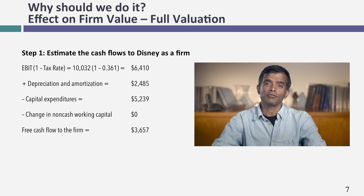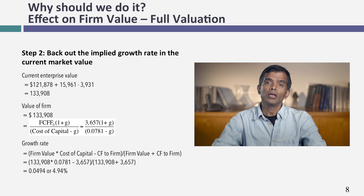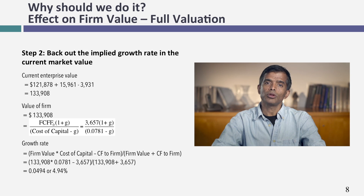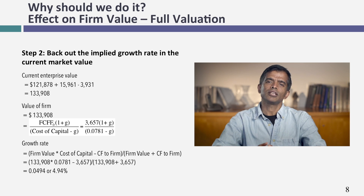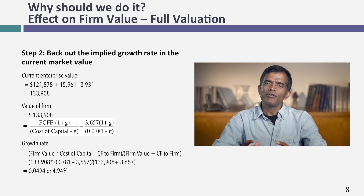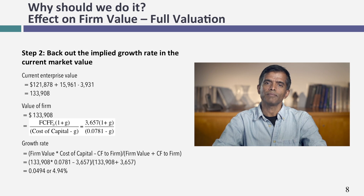Let's back out what the market is attaching as a value to Disney's operating assets — this is called Disney's enterprise value. I take the market value of equity, add on the market value of debt ($15.96 billion), and subtract out cash, giving about $133.9 billion as the enterprise value. Estimating Disney's cash flows at roughly $3.657 billion and knowing the existing cost of capital is 7.81%, I can back out the implied growth rate the market is assuming for Disney in the future, which comes out to about 4.94%.